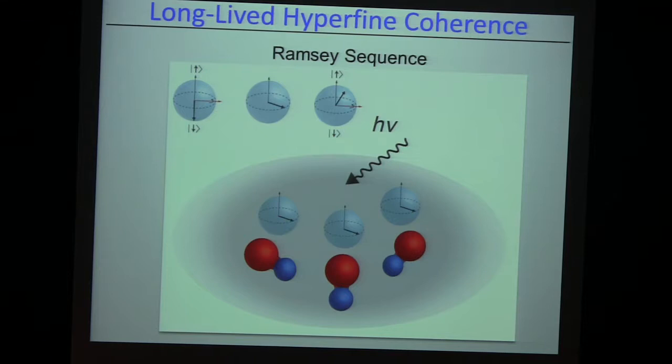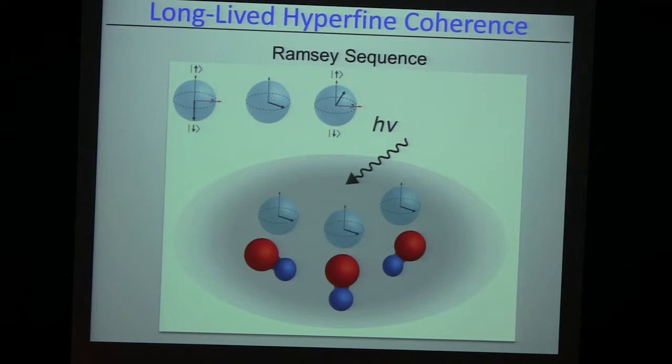Now we can use this handle on the molecules in order to produce a hyperfine superposition of the lowest two states, and then initialize with our two-photon pulse a Ramsey sequence. Spin-up and spin-down on my Bloch sphere are now two nuclear alignments of the molecule in the J equals zero ground state. That's actually pretty nice — it's a pretty okay clock. It only has nuclear magnetic moments because we are in a singlet molecule, so the electron spin is completely shielded.